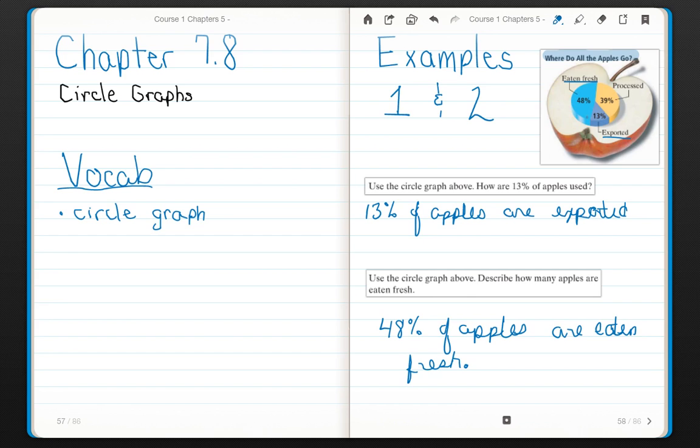Now notice 48% is nearly half—it's only 2% away from 50%. So notice that the light blue area is almost half of my circle graph. The other 52%, or almost half, is then split between processed (things like pie filling and applesauce) and exported. So 39-40% is a significant portion versus 13%, which is really pretty small.